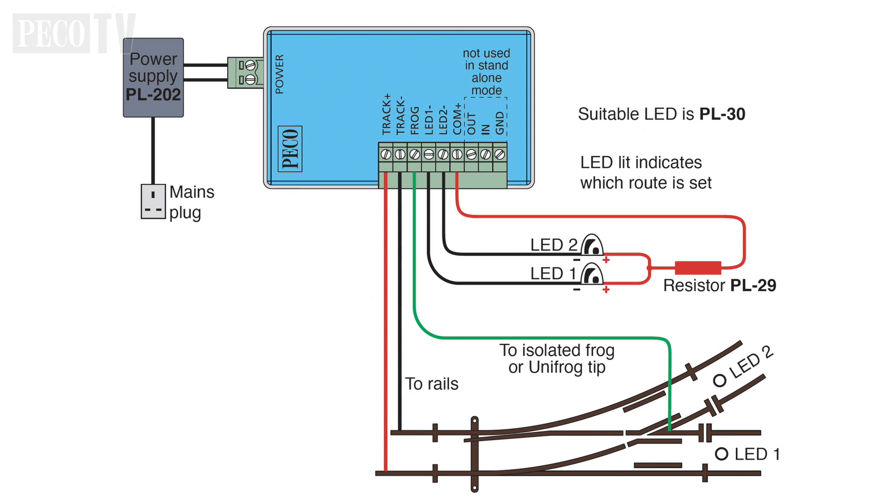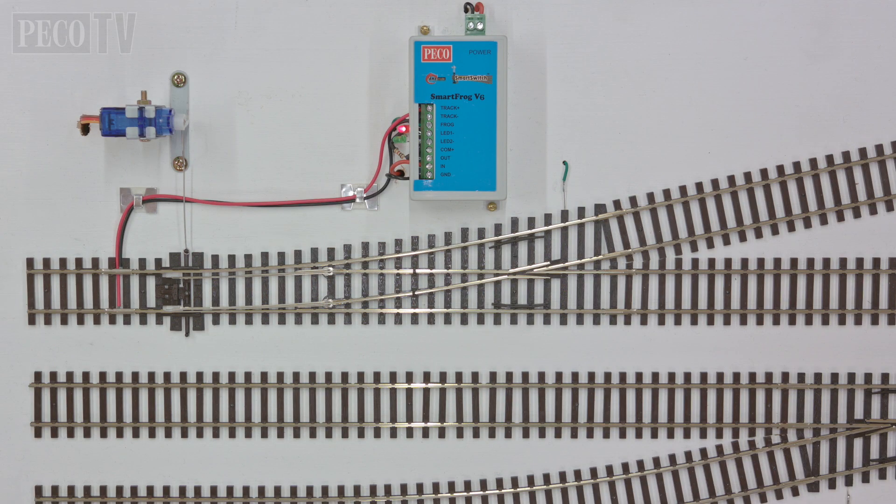As shown in this diagram, we also recommend using the PL 202 power supply to operate your unit. If you are using manually operated turnouts or solenoid type motors, these make frog polarity switching easy and straightforward.